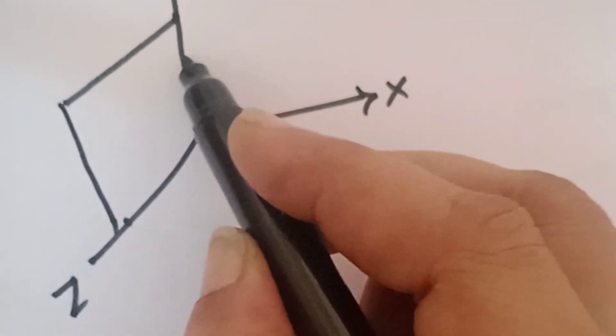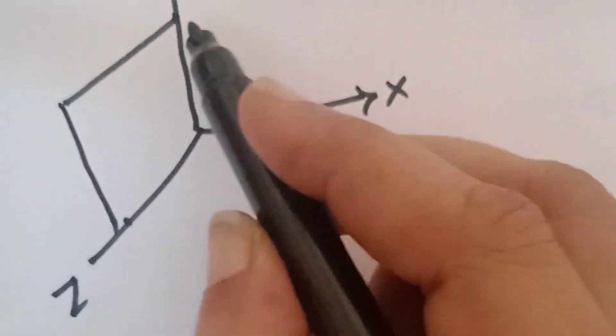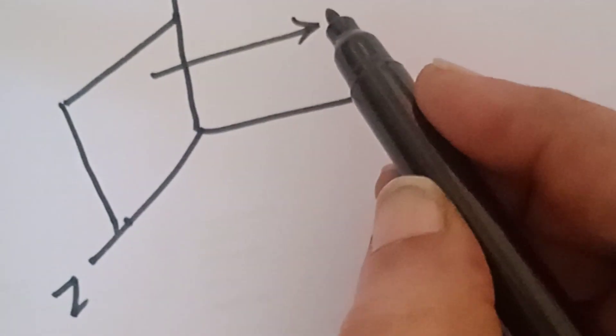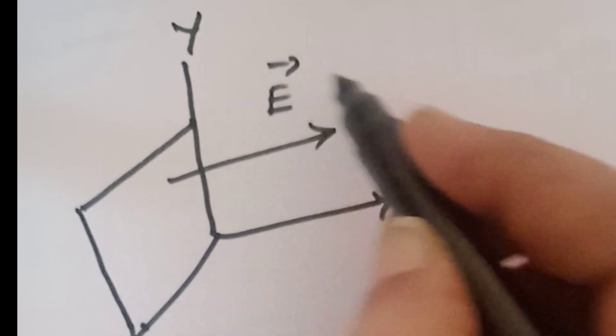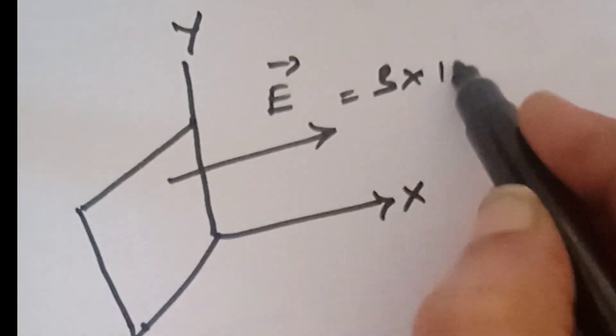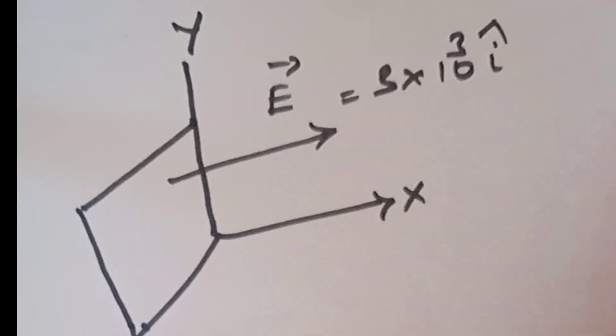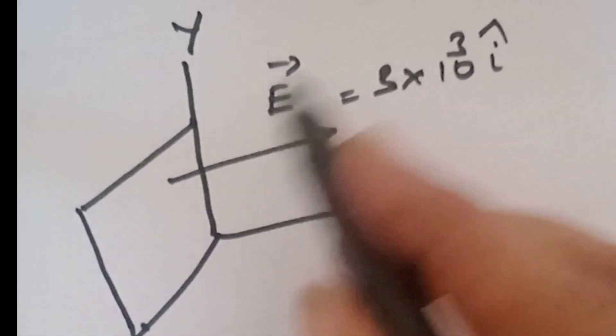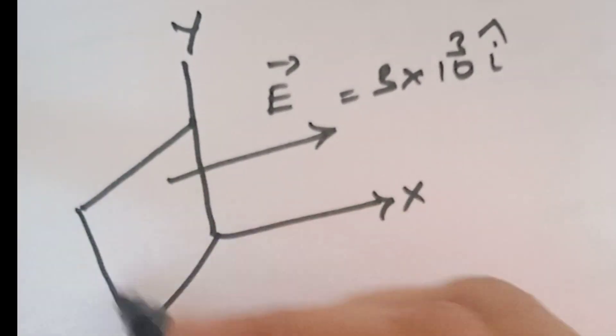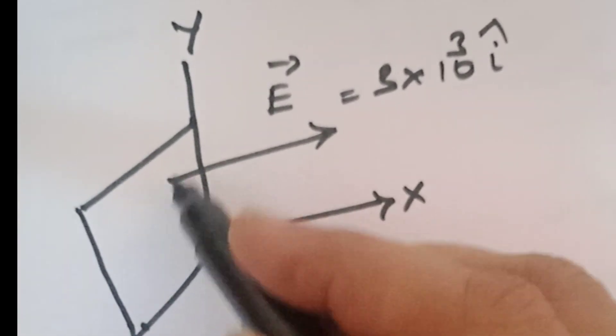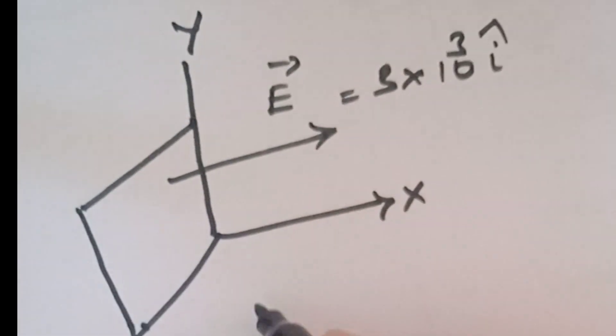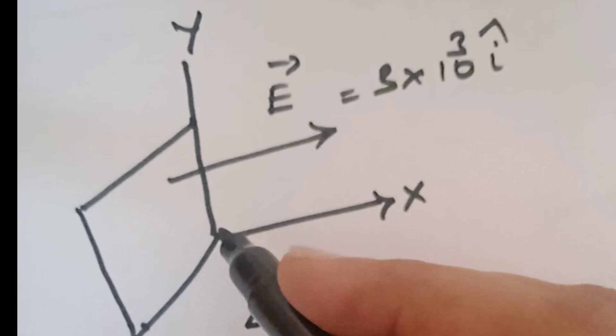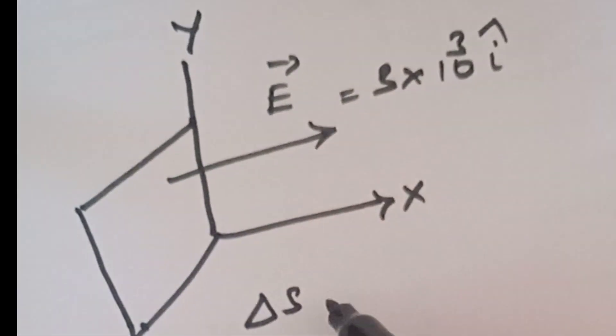It's parallel to yz plane. So here we can take field E vector is equal to 3 into 10 power 3 i cap newton per coulomb. So this surface will be electric field in the direction of the surface. So the flux will show you the number of field lines. So let's look at the surface. So area of the surface.